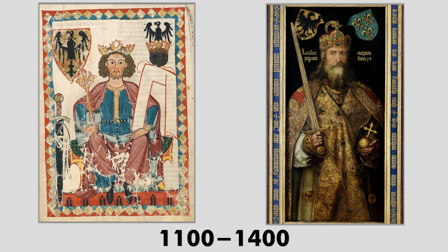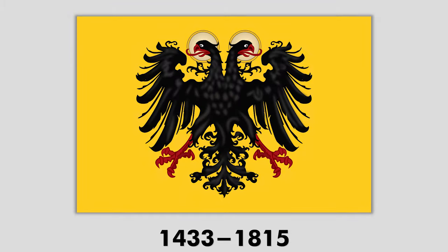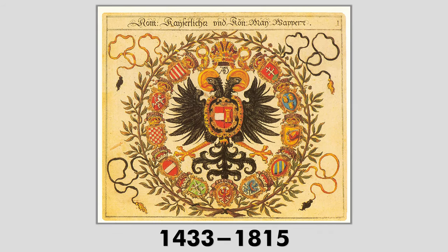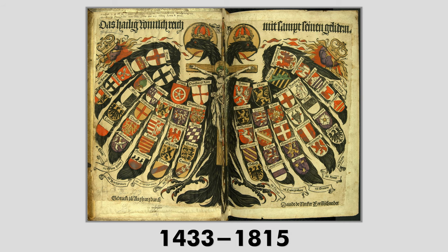But in the 14th century, it was gradually reinterpreted as representing the empire. In the early 14th century, the claws and beak of the eagle were colored red. From the early 15th century, a double-headed eagle was used. In heraldry, the double-headed eagle is a charge associated with the concept of empire.